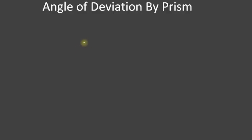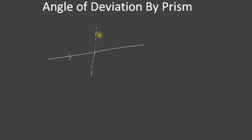Hello students, welcome to Physics Platter. Today we are going to derive and discuss the angle of deviation by a prism. We know that light travels in a straight line. If there is an optical event, for example the light falls on a surface and gets refracted, it bends from its original path. Deviation is the angle by which it bends from its original path.